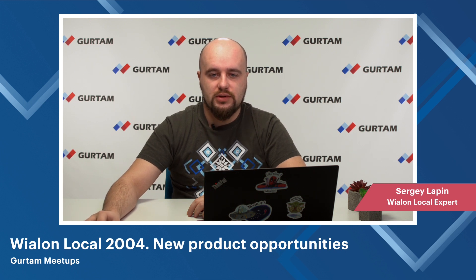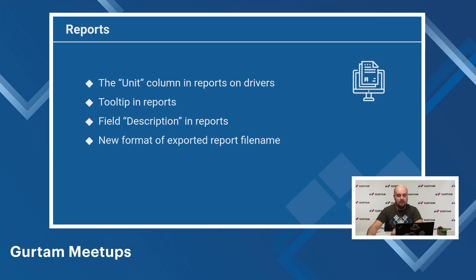There are many other features to mention, so we will enumerate them. The unit column in reports for drivers: the unit column is now available in eco-driving and infringement tables in reports for drivers. There is also a count column in the infringement table. As for tooltips in reports, an exclamation mark next to the disable button informs you what went wrong and what you need to do to create the report successfully.